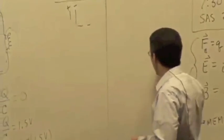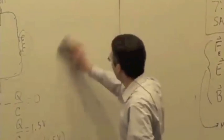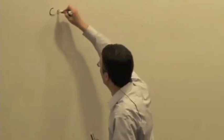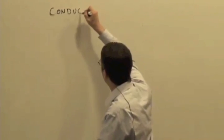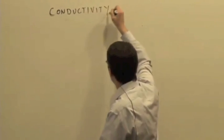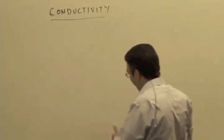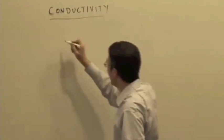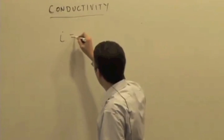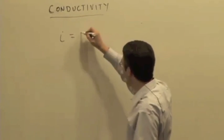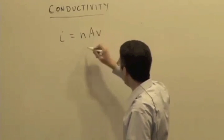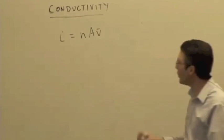Next thing we want to talk about is conductivity. We've seen that little i, or electron current, is equal to NAV, where V is the drift speed.